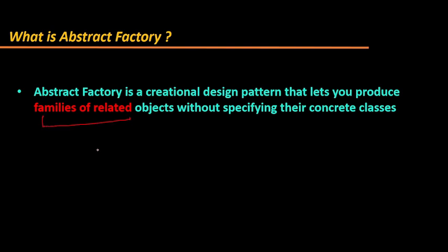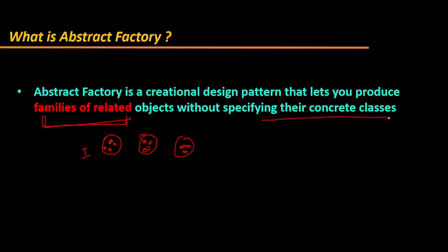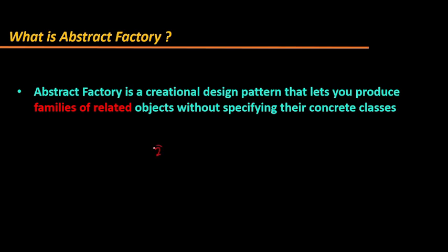Don't worry if you don't understand it yet. What it is saying is: if you want to create similar or related objects, you can use the Abstract Factory design pattern without specifying their concrete classes or without modifying their existing code. In this video, I will be sharing two examples — one in layman's terms and one as a Java example.